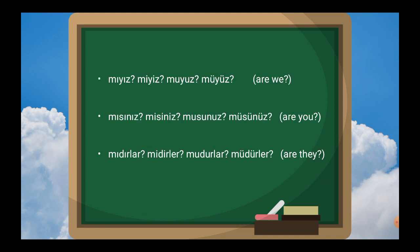For 'are we?': ız, iz, uz, üz. That is: mı plus ız, mi plus iz, mu plus uz, mü plus üz. If the word ends in a vowel: m plus yız, miyiz, muyuz, müyüz.